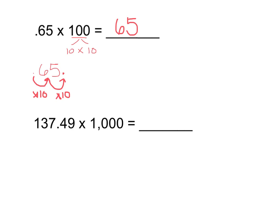Let's take a look at another problem. Here we have 137.49 times 1,000. Let's think about it in terms of money again — let's say that each concert ticket costs $137.49 and 1,000 people go to the concert. How much money was spent in total on all the concert tickets? We're going to start with 137.49. I know that 1,000 is the same thing as 10 times 10 times 10, so I need to move my decimal place to the right three times, one time for each group of 10.